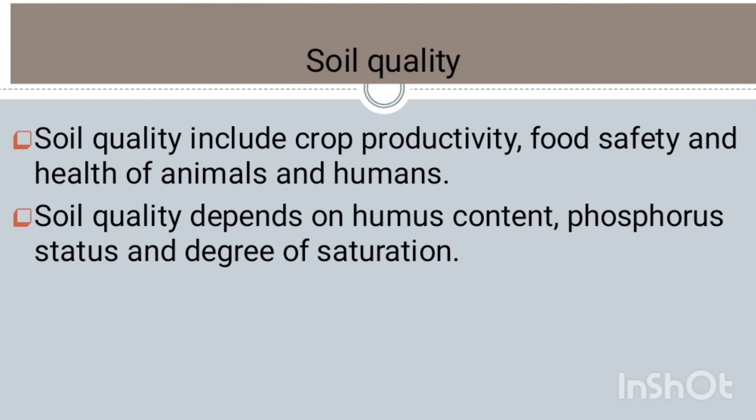Soil quality can be defined as the capacity of the soil to function within the boundaries of an ecosystem to sustain biological productivity, maintain environmental quality, and promote plant and animal health. Soil quality includes crop productivity, food safety, and health of animals and humans. Soil quality depends upon humus content, phosphorus status, degree of saturation, etc.